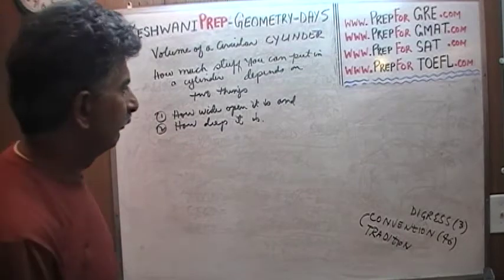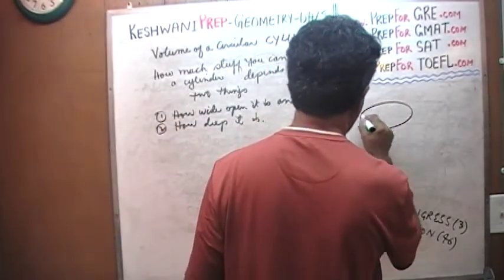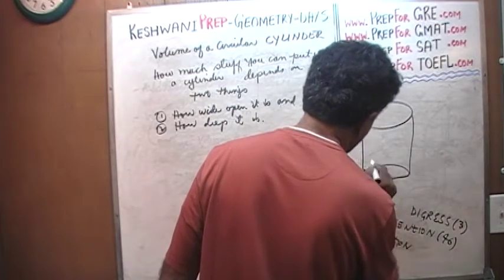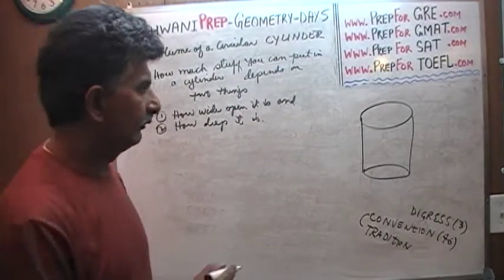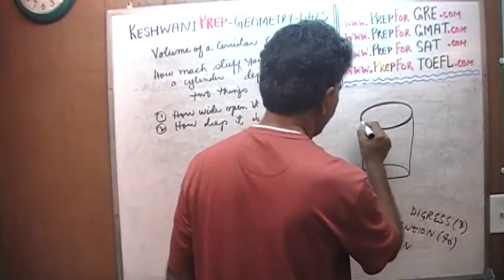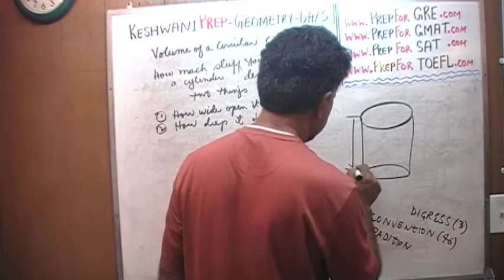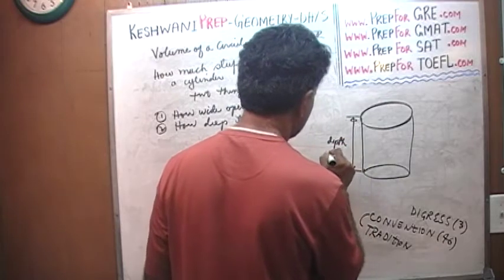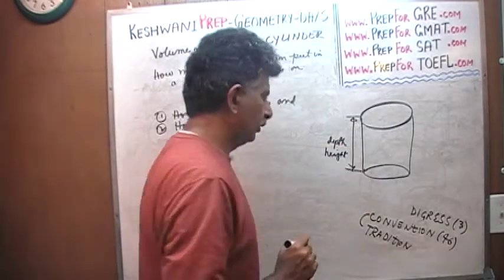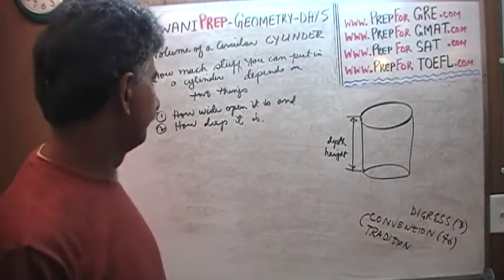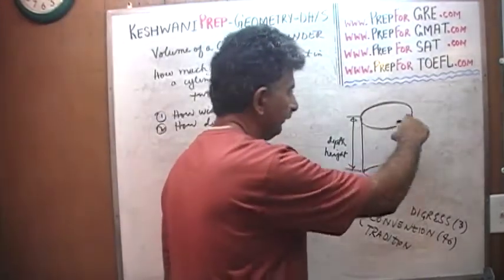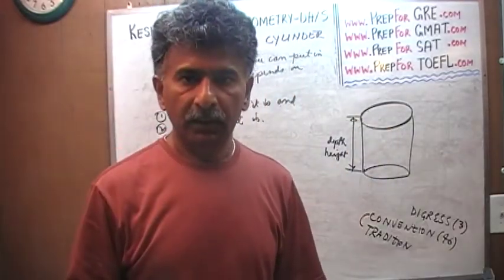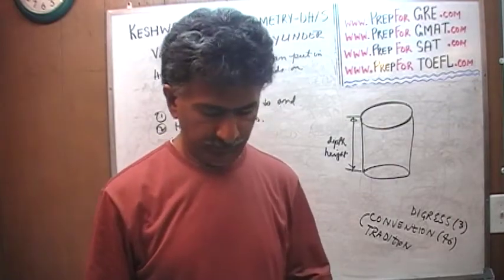How deep it is — this is known as the depth, or the height. We can talk about the depth of the cylinder or the height of the cylinder — same thing. And how wide open it is: obviously, the bigger the opening, the more stuff you'll be able to fit inside it, and the deeper it is, the more stuff you'll fit inside it.